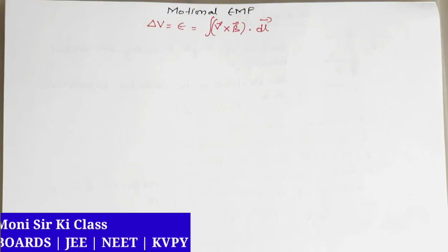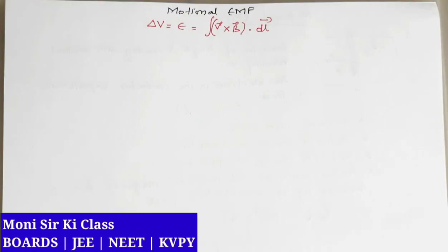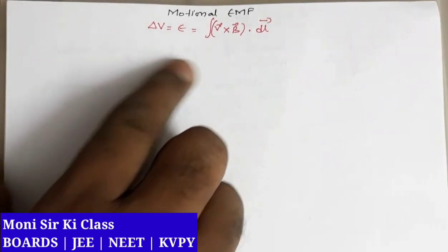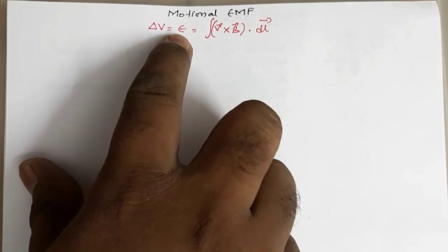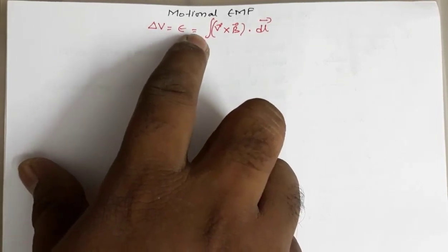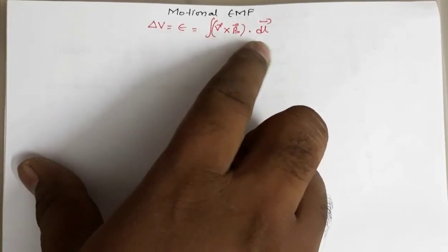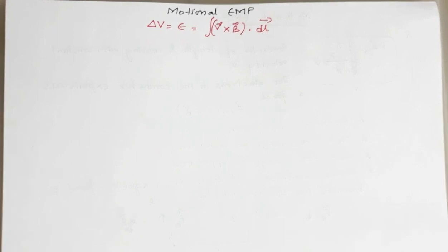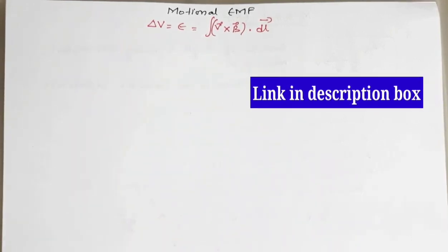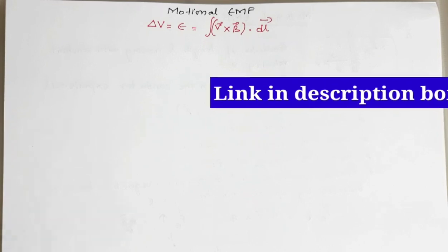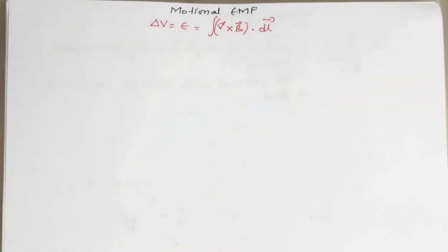Hello everyone, welcome to my channel. Today we are going to discuss the implication of the expression for motion EMF: delta V, or the motion EMF E, is equal to the integral of V cross B dot dL. This expression we have derived in my previous video. Now we will see the importance of this expression and how it can be used to solve numericals.